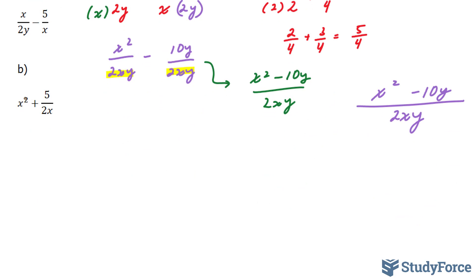In part b, we have this monomial, x squared plus a fraction, 5 over 2x. Let's use the same technique as we did at the beginning. We want to make the denominators the same.